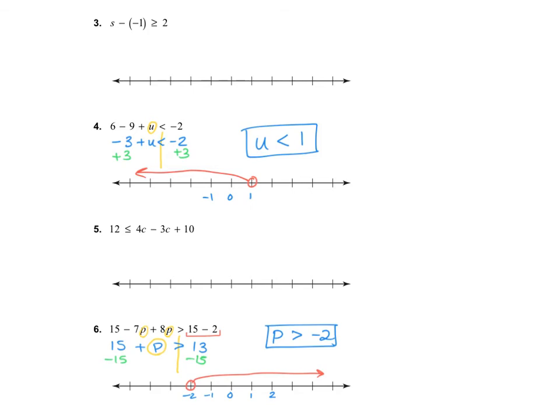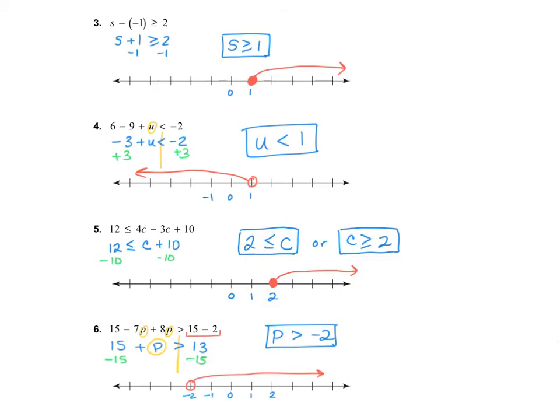Okay, I'd like for you to try numbers 3 and 5 on your own, and then turn the video back on and see how you did. All right, number 3, I got S is greater than or equal to 1, which means a closed circle at 1 heading up. And on number 5, 2 is less than or equal to C. Or if you flip that around, C is greater than or equal to 2, which means it's a closed circle again and heading up at 2.